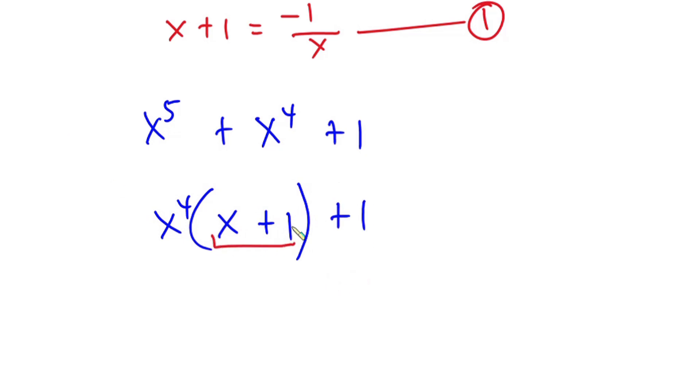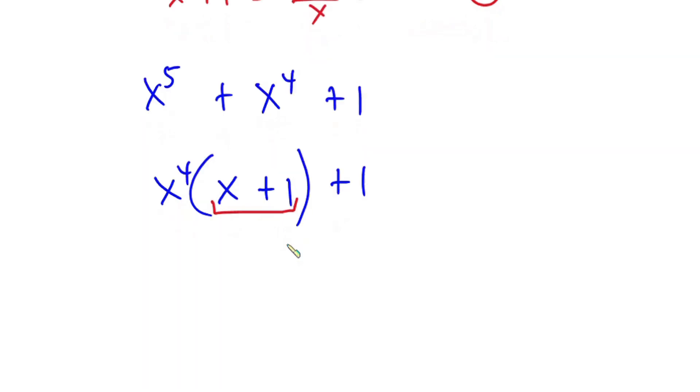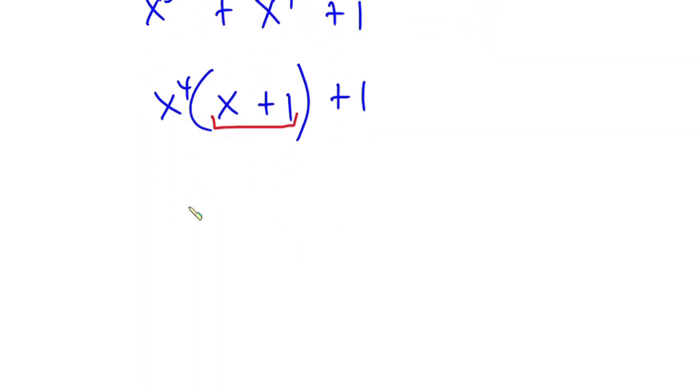And now we know x plus 1 from equation 1 which is negative 1 over x. So substituting this into this expression, we have x to the fourth power into negative 1 over x then plus 1.